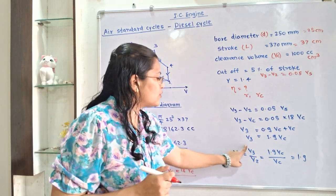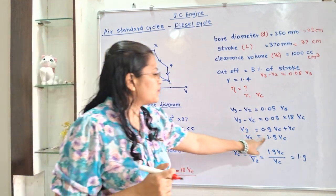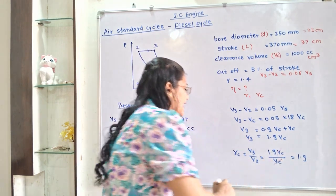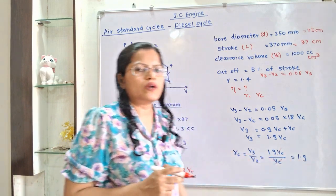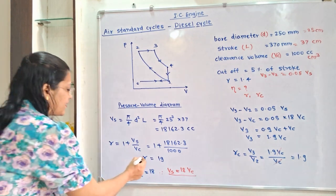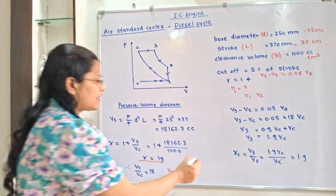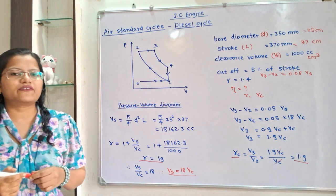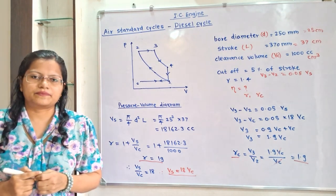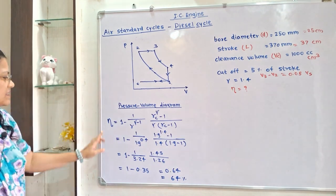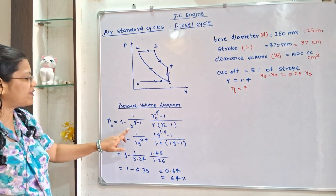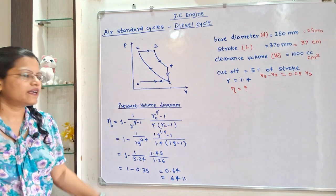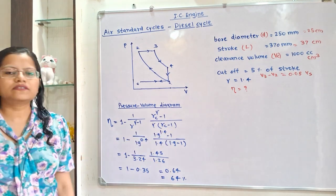Since Rc equals V3 divided by V2, and V3 is 1.9 Vc and V2 is Vc, the Vc terms cancel and the cut-off ratio Rc equals 1.9. With R equal to 19 and Rc equal to 1.9, we can now calculate the air standard efficiency of the diesel cycle using the formula: efficiency = 1 minus (1 / R^(γ−1)) × [(Rc^γ − 1) / (γ × (Rc − 1))].